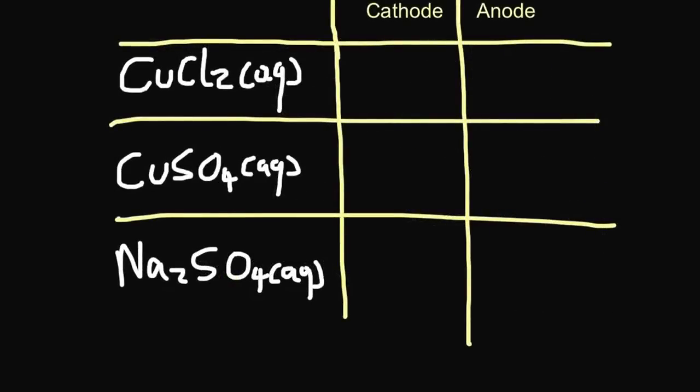You need to be able to know what is formed for the following three compounds. Let's consider copper chloride. First off, at the negative cathode, you've got competition between the copper positive ions and the H+, because it's in solution. Copper is less reactive than hydrogen, so copper is formed, and you'd see bits of copper formed sticking to the electrode. The same thing happens for copper sulfate, so you get copper forming. For sodium sulfate, as sodium is more reactive than hydrogen, hydrogen is less reactive than sodium, hydrogen is formed, H2.